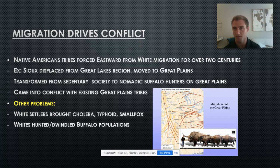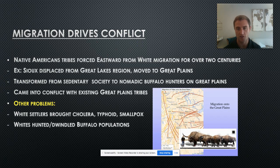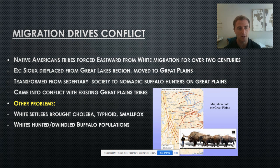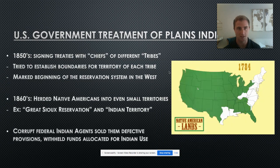Of course, the problems we always see when new settlers come into lands inhabited by Native Americans include disease — cholera, typhoid, and especially smallpox — and then the ecological imperialism that occurs as a result, especially regarding the buffalo. Tens of millions of buffaloes roamed the plains before Americans moved in, and they were now at the point of almost extinction.